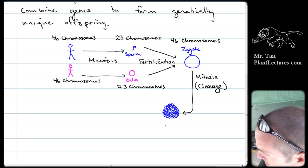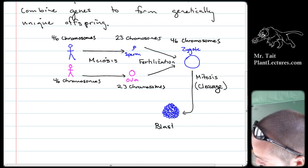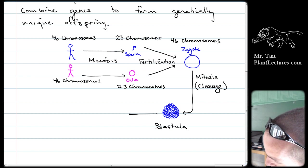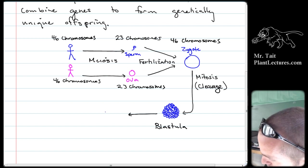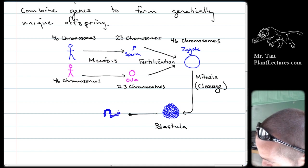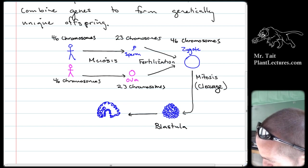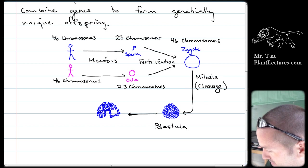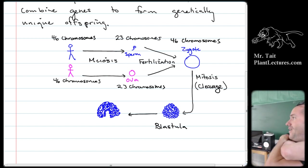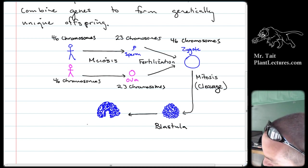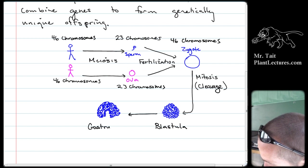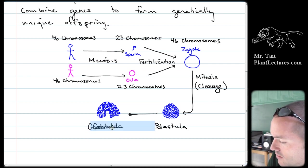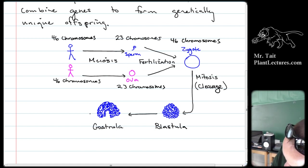After the blastula stage, it gets an indented region — a pore — and this is called a gastrula. In a gastrula, there's no differentiation yet; all the cells are still stem cells at this point. Then it goes through normal mitosis, with differentiation and mitosis happening together.